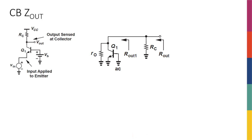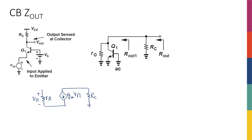If I want to actually draw the small signal model, I have my R_pi, I have my gm*V_pi, this being V_pi. I have RC connected to ground — and by the way, this is AC ground because it's basically replacing VCC. Now, on the base side, I have a DC voltage, so that's also ground.